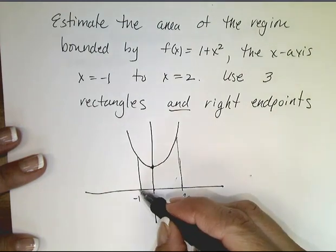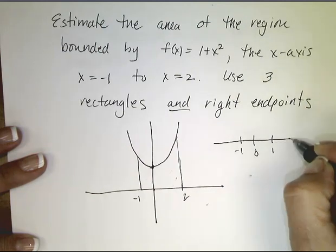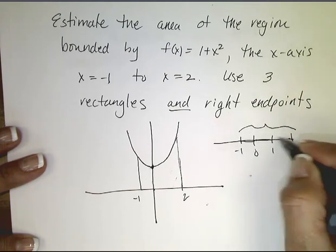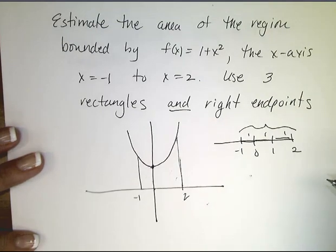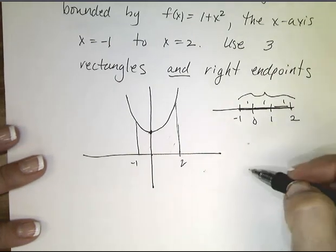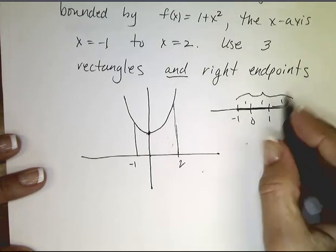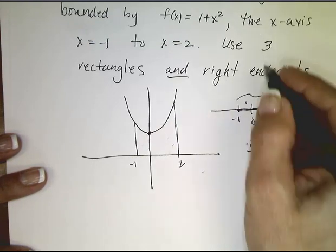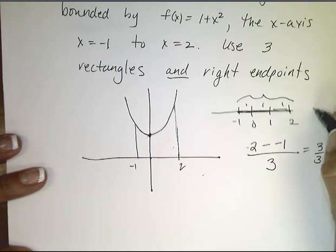If I break this up into three intervals of equal length, we'll put 0 there, -1, 1, and 2. If I break this whole interval into three pieces, notice that the length of each is 1. The way I could solve that if I changed to a different number of rectangles is I would take the length of the interval — 2 minus (-1) — and divide it by the number of rectangles, which is 3. That's 3 over 3, which is 1, which we already knew.